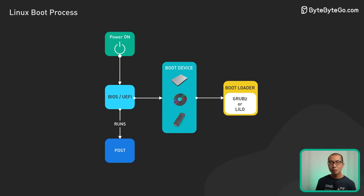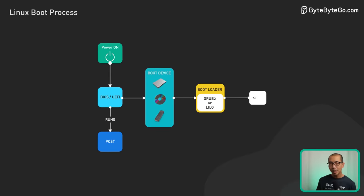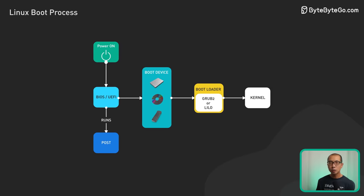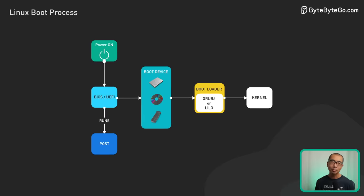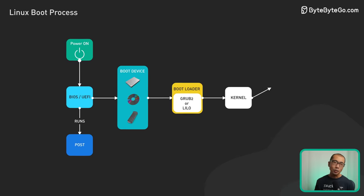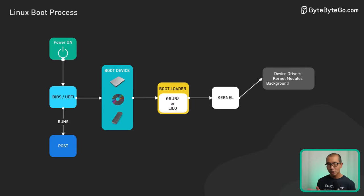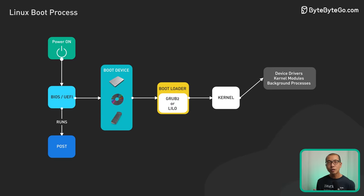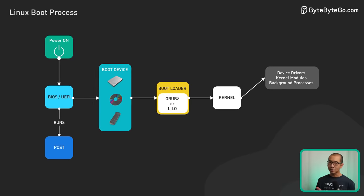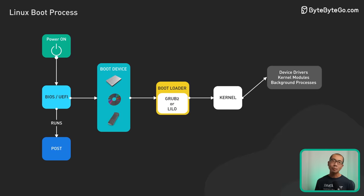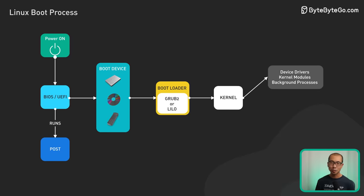Once Grub2 loads itself up, it inserts the Linux kernel into memory and hands control over to the kernel to finish the startup process. After the bootloader starts the kernel, the kernel takes over the computer's resources and begins initiating all the background processes and services.